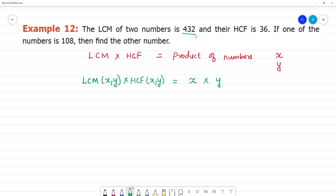The LCM of two numbers is 432, we have two numbers and their LCM is 432. HCF is going to be 36.